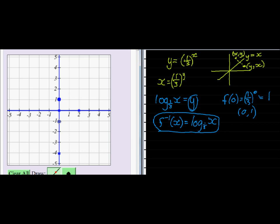The y-axis will be the asymptote for the inverse function. And instead of cutting at the point zero comma one, our inverse will cut at the point one comma zero. In other words, it will intersect there.